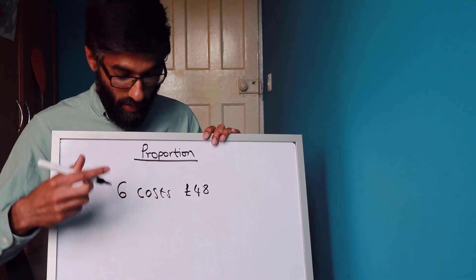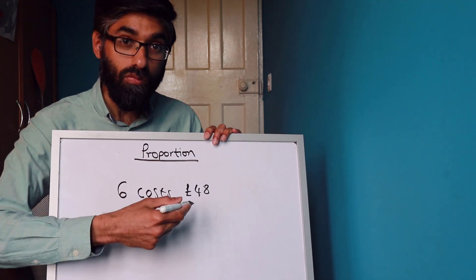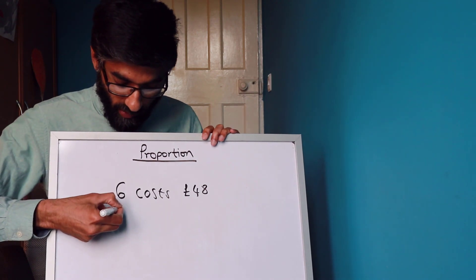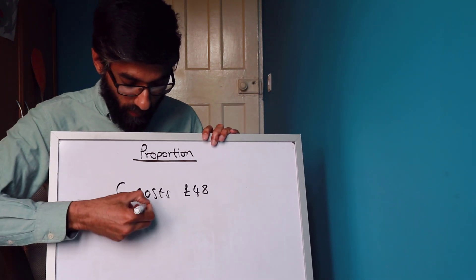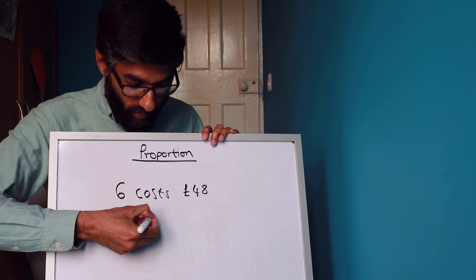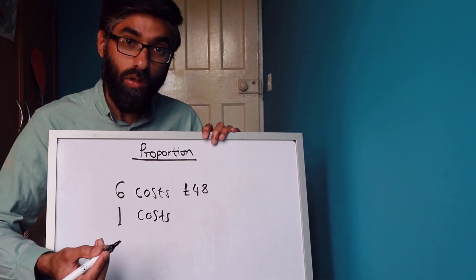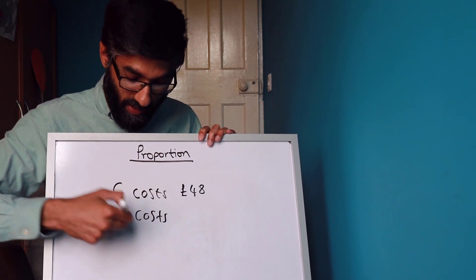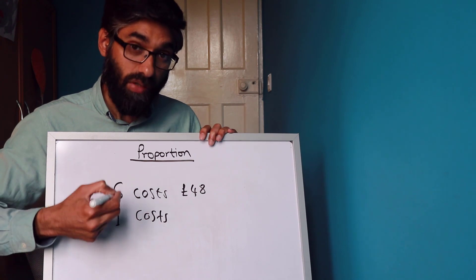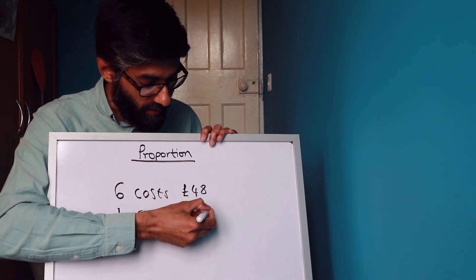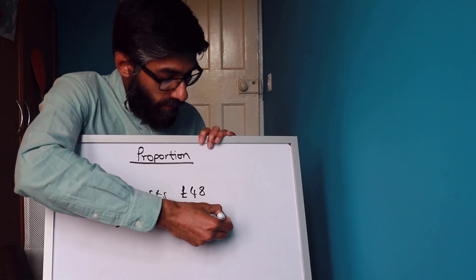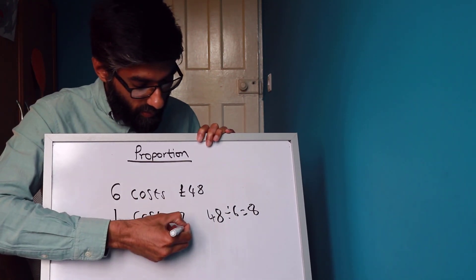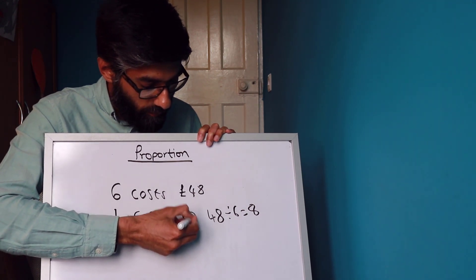Six tickets cost 48 pounds. How much will each ticket cost? We find out the price of one ticket. We need to divide the total amount of six tickets by the number of tickets — that gives you the price of one. So 48 divided by 6 gives us 8, so one ticket costs 8 pounds.